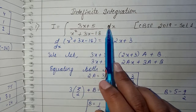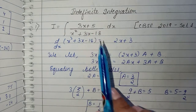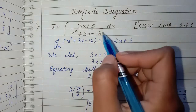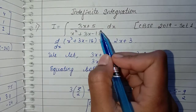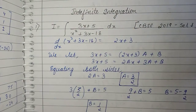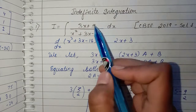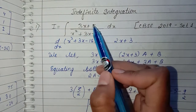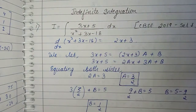The first question is the integration of (3x+5)/(x²+3x-18). For this type of question, we do the same thing — we take the denominator and differentiate it. The differentiation gives us 2x+3.